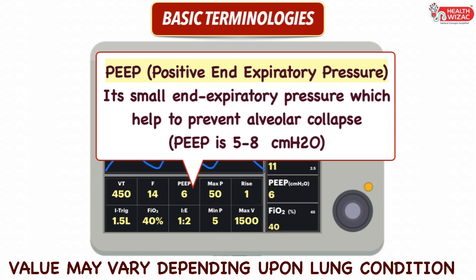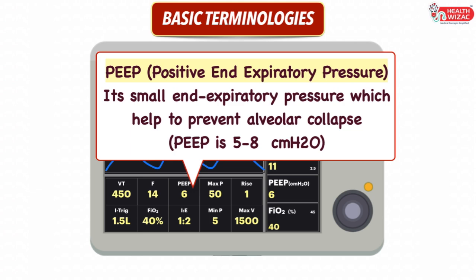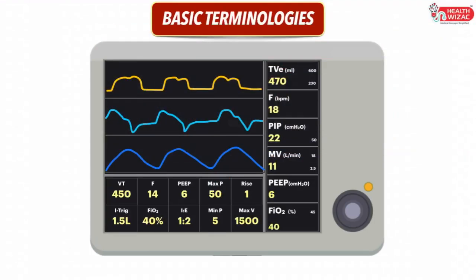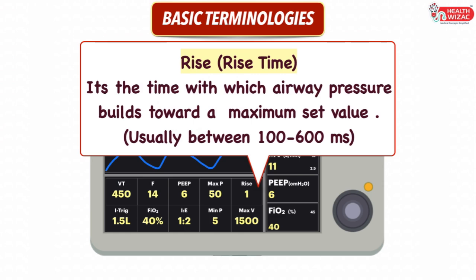PEEP value may vary depending upon the lung condition and the underlying pathophysiology of the disease. Next are the maximum and minimum pressure settings — the pressure range used by the ventilator to deliver the desired tidal volume. This may vary as per lung compliance and resistance, and is usually set between 5–50 cm of water. Next is rise time, which is the time with which airway pressure builds towards a maximum set value, usually set between 100–600 ms.